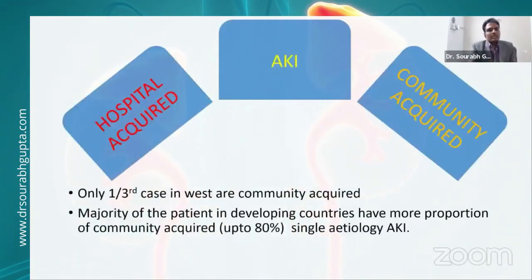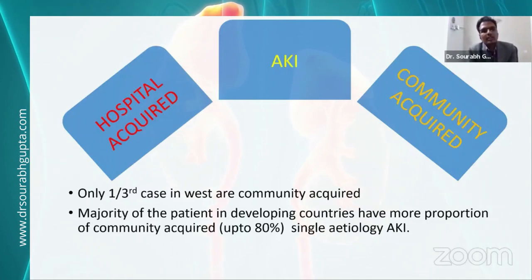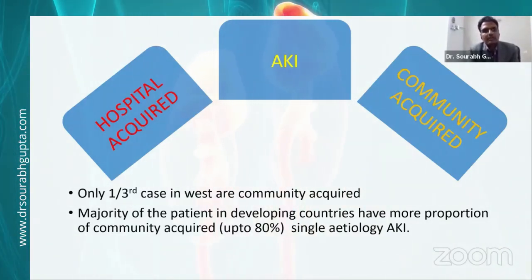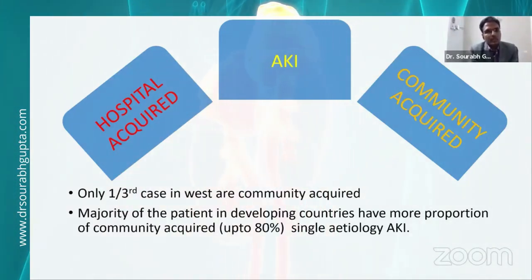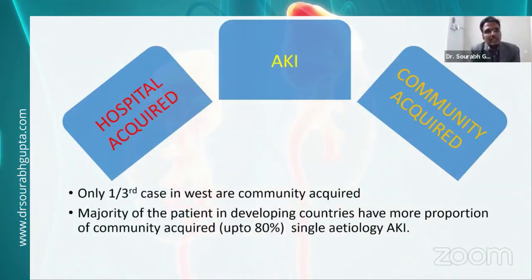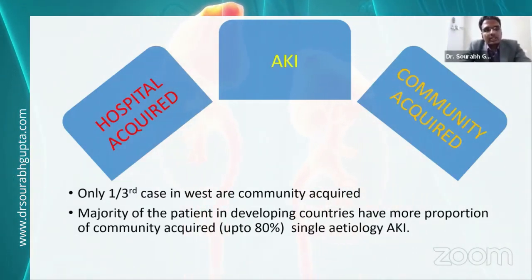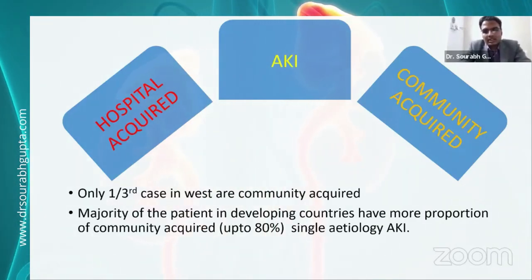AKI can be hospital-acquired or community-acquired. Community-acquired AKI is when the patient presents with AKI or develops it within 48 hours of admission. The majority of AKI cases in the Western world are hospital-acquired, even in the pediatric population. In contrast, in developing countries like India, up to 80% of AKI is community-acquired. Hospital-acquired AKI is mostly multifactorial, while community-acquired AKI tends to be single-etiology.